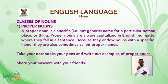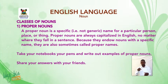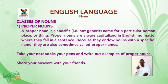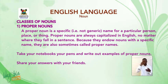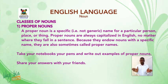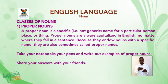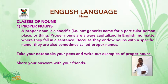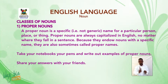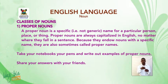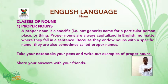Classes of nouns. Proper nouns. A proper noun is a specific — that is, not generic — name for a particular person, place or thing. Proper nouns are always capitalized in English, no matter where they fall in a sentence. Because they endow nouns with a specific name, they are also sometimes called proper names.